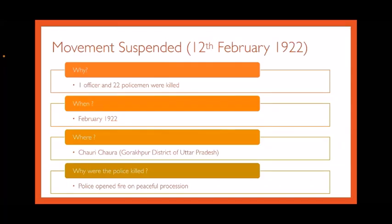The Non-Cooperation Movement was suspended on 12 February 1922. Why? In February 1922 at Chauri Chaura in Gorakhpur district of Uttar Pradesh, the police had opened fire on a peaceful procession. Because of this, the people were angry and they set fire to the police station. One officer and 22 policemen were killed. This violent incident led Gandhiji to suspend the movement.